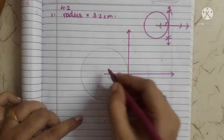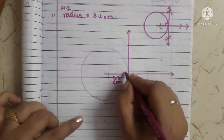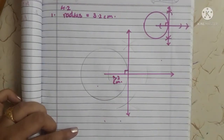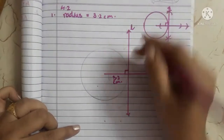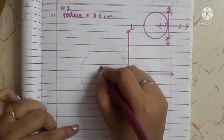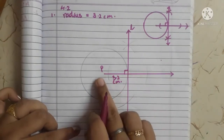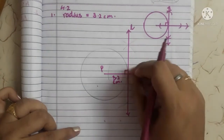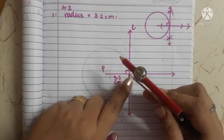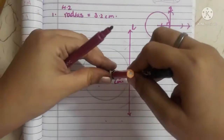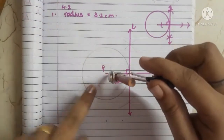The radius of the circle is 3.2 centimeters and this is the required tangent — it is perpendicular. Now we will give a name to the tangent. The name of the center of the circle is given as P, so we write P here. First draw the circle, extend the radius, keep your rounder on the tip where the circumference is touching this line. Open it less than the radius and draw two arcs.